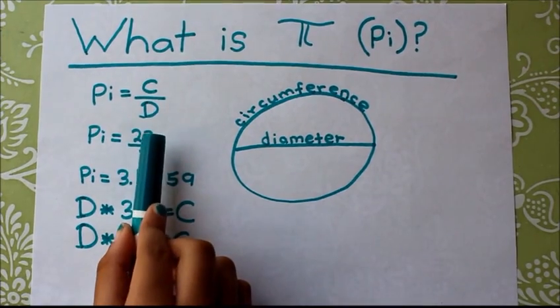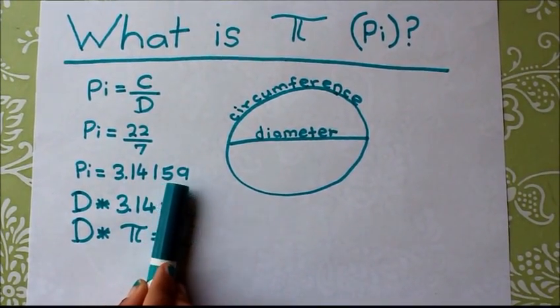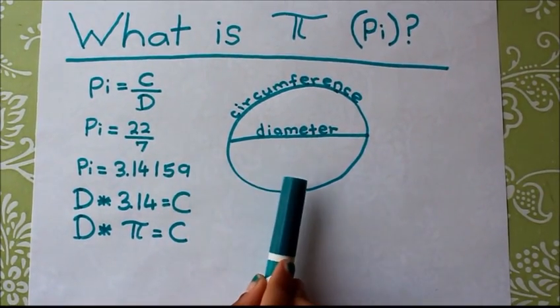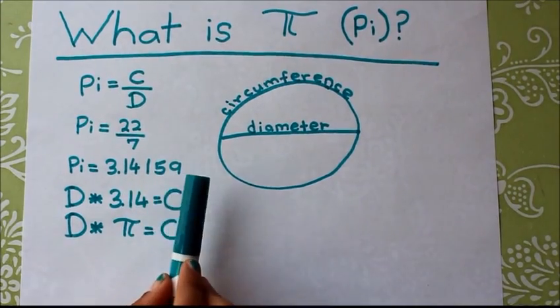Pi is equal to 22 over 7, which is equal to 3.14159. It has many more digits after this, but it is commonly recognized as 3.14.